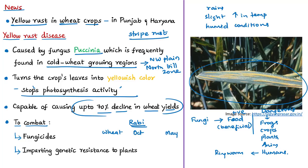Wheat is sown between late October and December, with harvesting beginning from April onwards. To contain yellow rust infections, fungicides can be used — for example, propiconazole, tebuconazole, and triadimefon are some usual fungicides used to combat yellow rust of wheat.